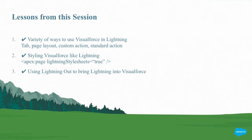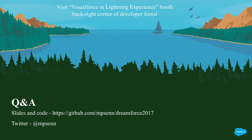Those were the three topics for today's session: the variety of ways you can use Visualforce in Lightning, the beta feature apex:page lightningStylesheets="true", and how to use Lightning Out to bring lightning components into Visualforce. We've got some time for Q&A. If you have more questions about the Lightning Style Sheets feature, stop by the Visualforce in Lightning Experience booth in the back right corner of the developer forest downstairs. Any code I was using will be up on GitHub.